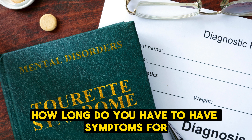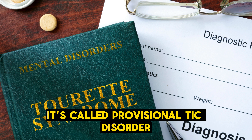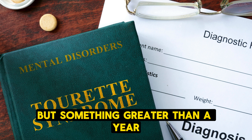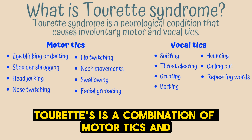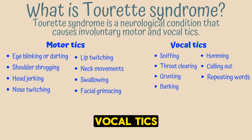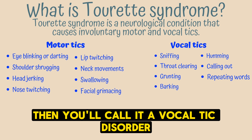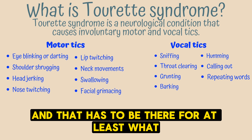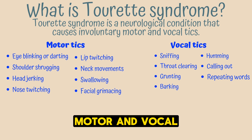Tourette syndrome requires symptoms for over a year; before that it's called provisional tic disorder at less than one year. Tourette's is a combination of both motor tics and vocal tics — if a person has only one type, it's called a vocal or motor tic disorder. Tourette's requires both motor and vocal tics for at least one year.